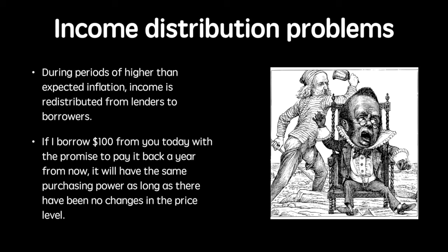Banks charge interest rates based on an expected inflation rate, and when it is higher than expected, they lose out. If the bank wants to make 3% on a loan and believes the inflation rate will be 4%, they will charge 7% on the loan to account for inflation. However, if inflation turns out to be 10% for the same period, they will lose out — they should have charged 13% to minimize any losses. Due to the unexpected rise in inflation, they will absorb the loss. The borrower gains and the lender loses.